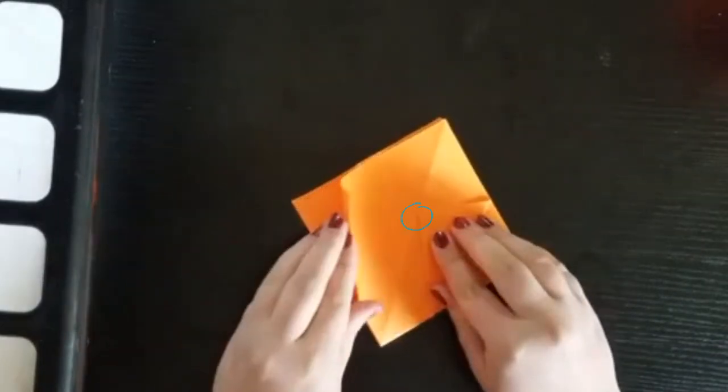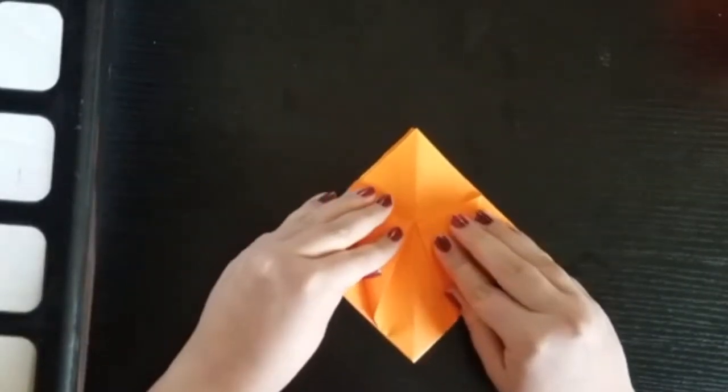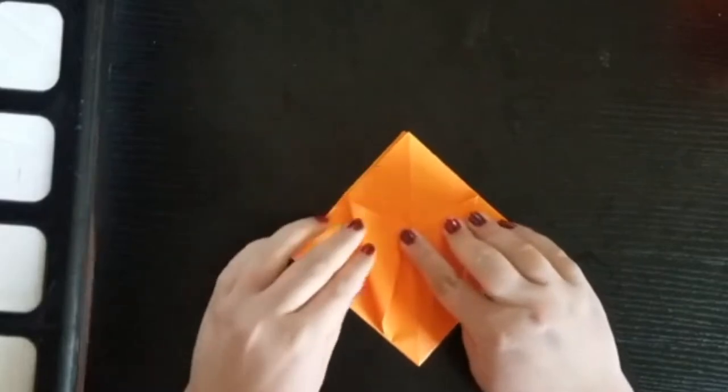It's okay if your isosceles triangle isn't perfect. This will just change the overall shape of your seed starter.